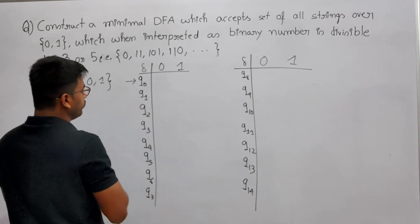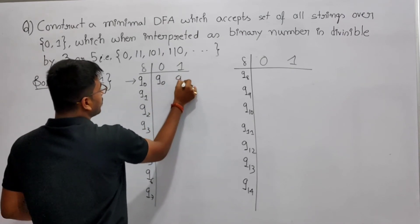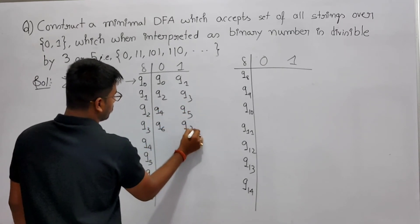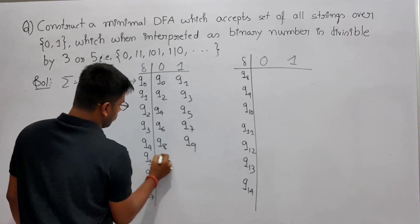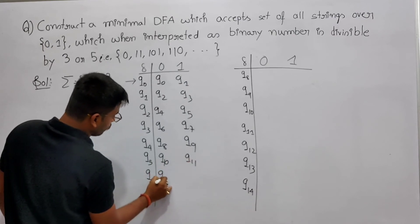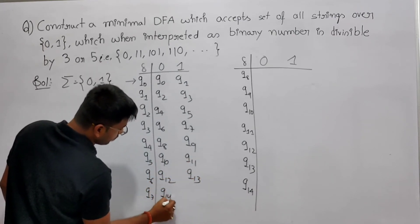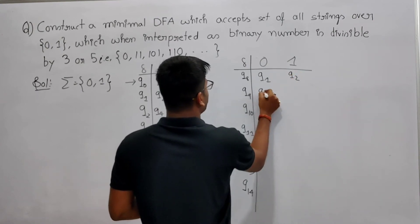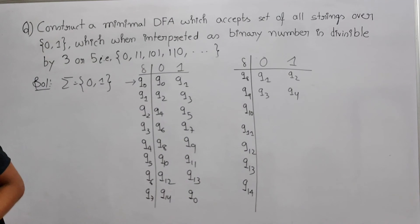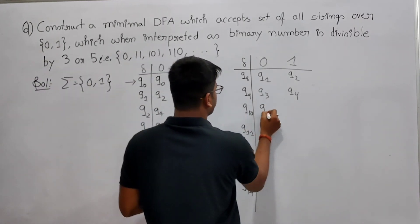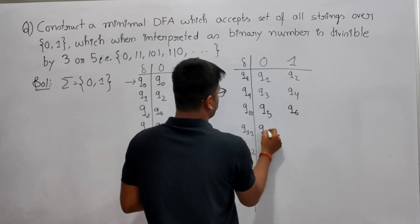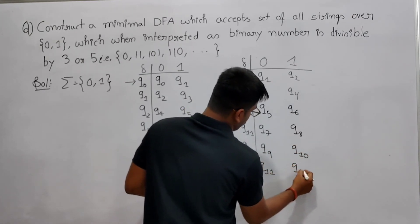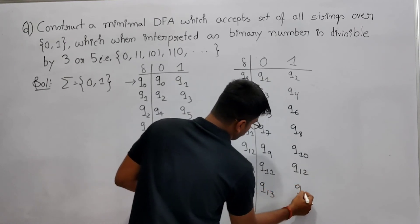So the priority states go from Q0 through Q14: Q0, Q1, Q2, Q3, Q4, Q5, Q6, Q7, Q8, Q9, Q10, Q11, Q12, Q13, Q14, then back to Q0, Q1, Q2, Q3, Q4, Q5, Q6, Q7, Q8, Q9, Q10, Q11, Q12, Q13, Q14. This is how you write the state transition table.